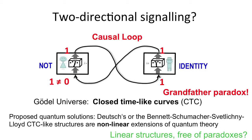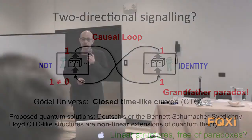There are attempts and proposed quantum solutions to these problems like Deutsch's version, and Bennett and Schumacher, Svetlichny and Lloyd CTC-like structures. But I want to warn you that these are nonlinear extensions of quantum theory. They do not preserve the linear structure of quantum mechanics. The question is whether we can do that and still be free of paradoxes. That's what the framework is about.